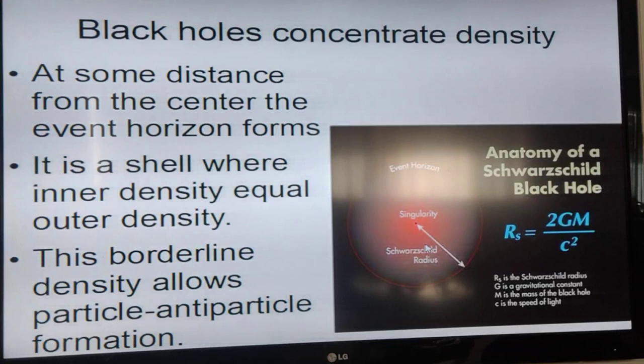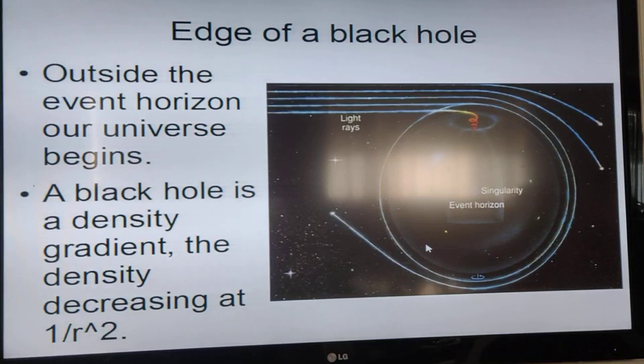At the borderline where the event horizon is, because of the density it allows the creation of particles and anti-particles. If you go outside the event horizon, that's where our universe begins. So basically what we call a black hole is a space-time density gradient. The density from the center outwards decreases at one over r squared.